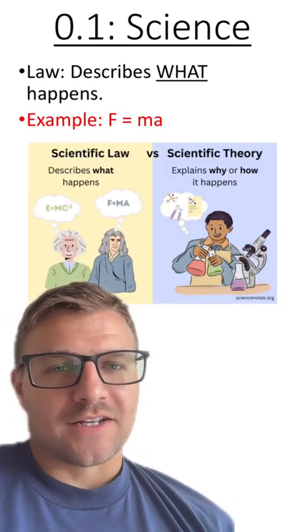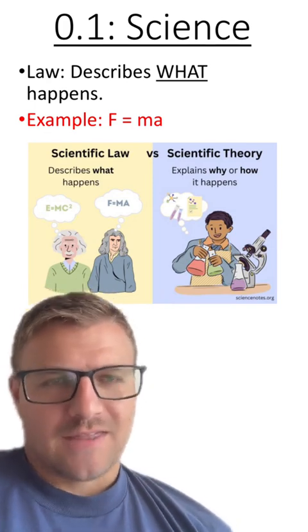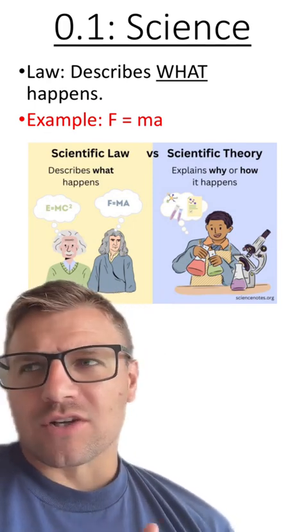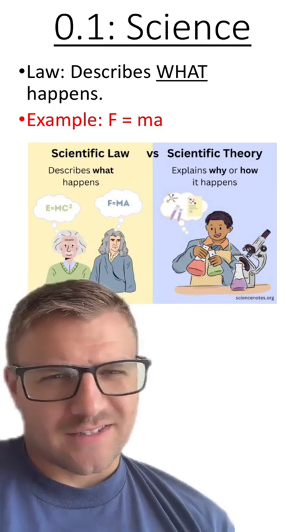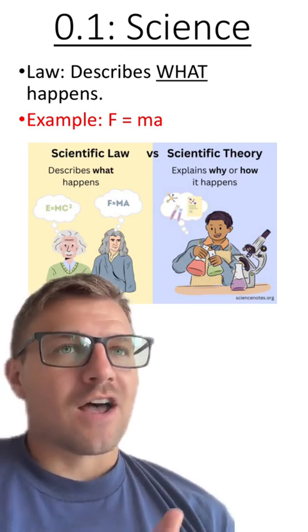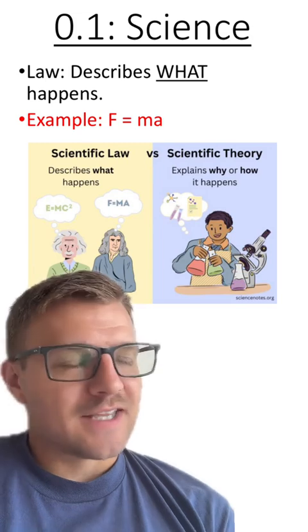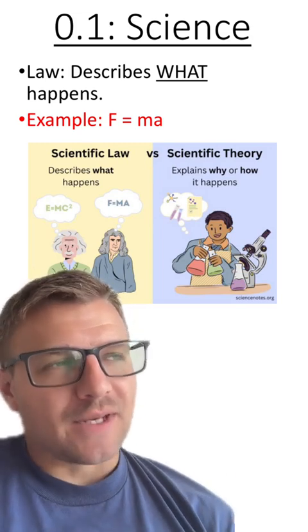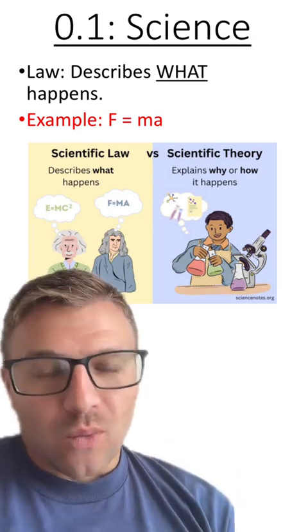A scientific law, on the other hand, describes what's happening. And these are usually mathematical in nature and under certain circumstances. For example, F equals MA, force equals mass times acceleration. That is a law because it's describing what happens. It's not describing how or why that's happening, it's just describing what is happening.